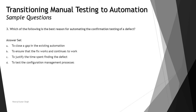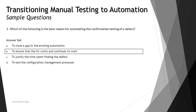So the right answer is B: to ensure that the fix works and continues to work. To validate that, we need an automated test because automated tests can be repeated and executed quite often without manual intervention.